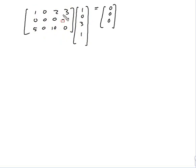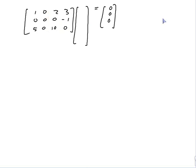There's a zero column in the matrix. So if I put a 1 in the position matching that second column, the result will be zero. That means the vector (0, 1, 0, 0) is in U.